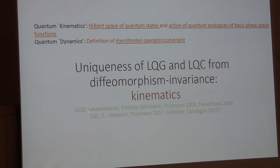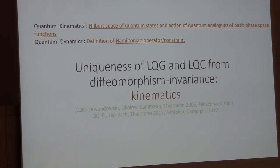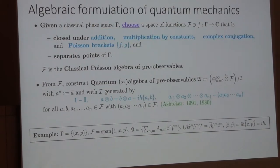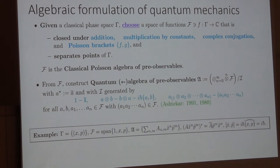In full loop quantum gravity, the LOST theorem — Uric and these other authors and Christian worked on it — and then Thomas, I, and Max worked on the application to isotropic loop quantum cosmology. There was also work on the kinematics of Bianchi I loop quantum cosmology done by Abai and Miguel Campiglia. But I'm going to be reviewing the work that I was involved in. The starting point is the algebraic formulation of quantum mechanics, where the basic object is the algebra of pre-observables. Usually it's called the algebra of observables, but in constrained Hamiltonian systems, 'observable' has another meaning, so pre-observables is a nice name for it.